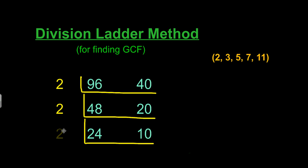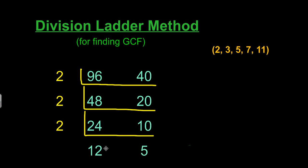So we write a 2 out to the side and divide by 2 to get the next two numbers, 12 and 5.